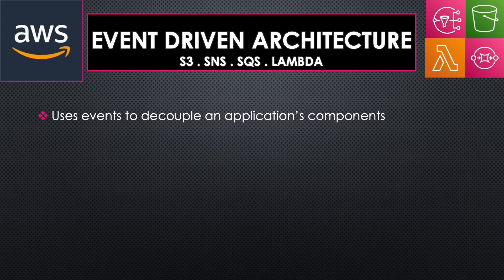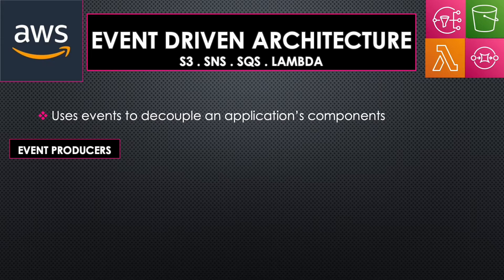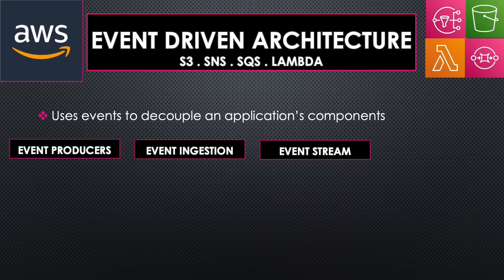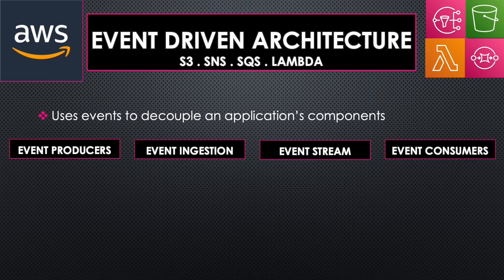This architecture mainly has four components. First, event producers — these are the ones that cause the change in state and produce the event. Next is event ingestion, which acts like an event router that filters and pushes the event to the next component. Then comes the event stream, which is optional and recommended if you're processing a huge number of events and would like to store them so consumers can retrieve from them. Finally, we have event consumers — these are the ones that actually take action on the events, like running some workflow or updating the database.